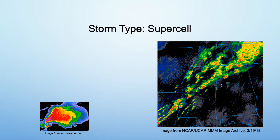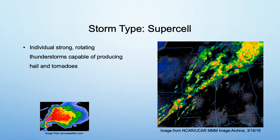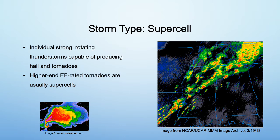Now for some background on each parent storm type. The first are supercells, which are individual, strong, rotating thunderstorms capable of producing hail and tornadoes. Most EF4 and EF5 tornadoes you hear about are from supercells. They are most common in the spring, but can occur at any time of year. The big picture on the right of the screen is from an event that had widespread discrete supercells, and the smaller picture on the left is a zoomed in view of a classic supercell. The tornado would be occurring in that hook you see in the bottom left corner.